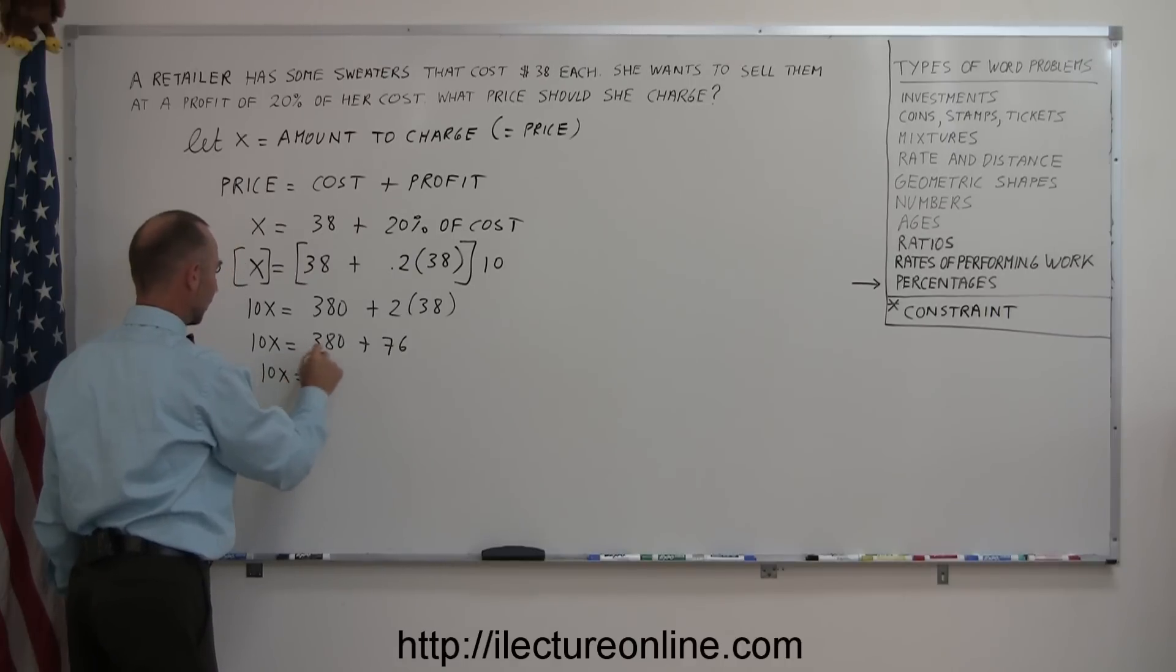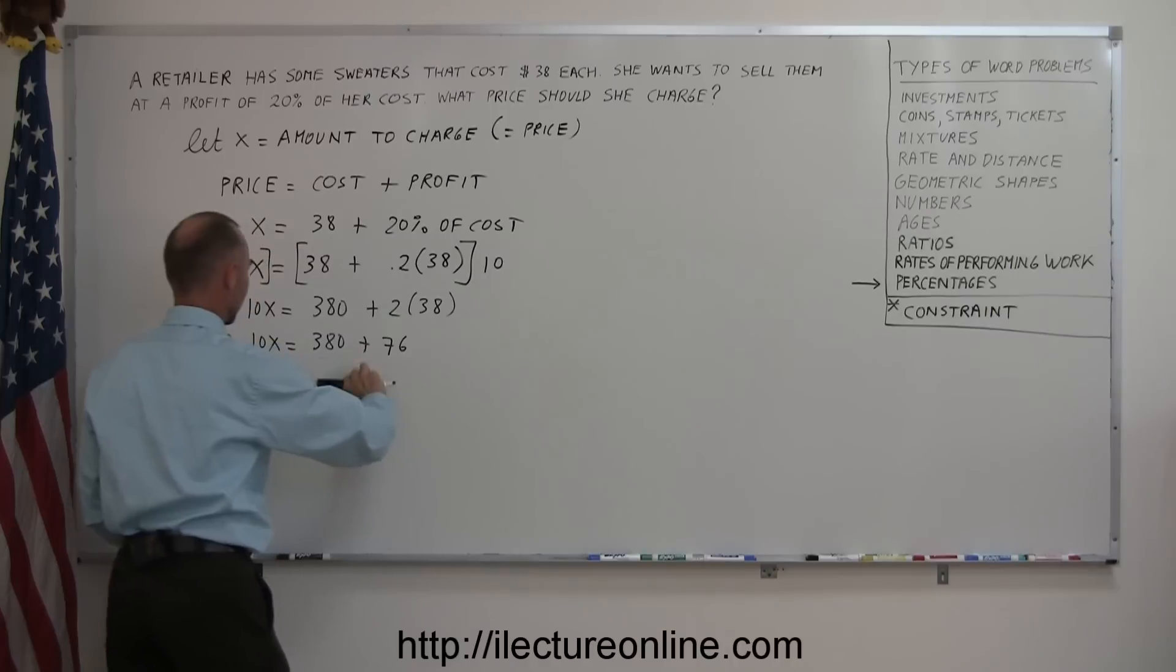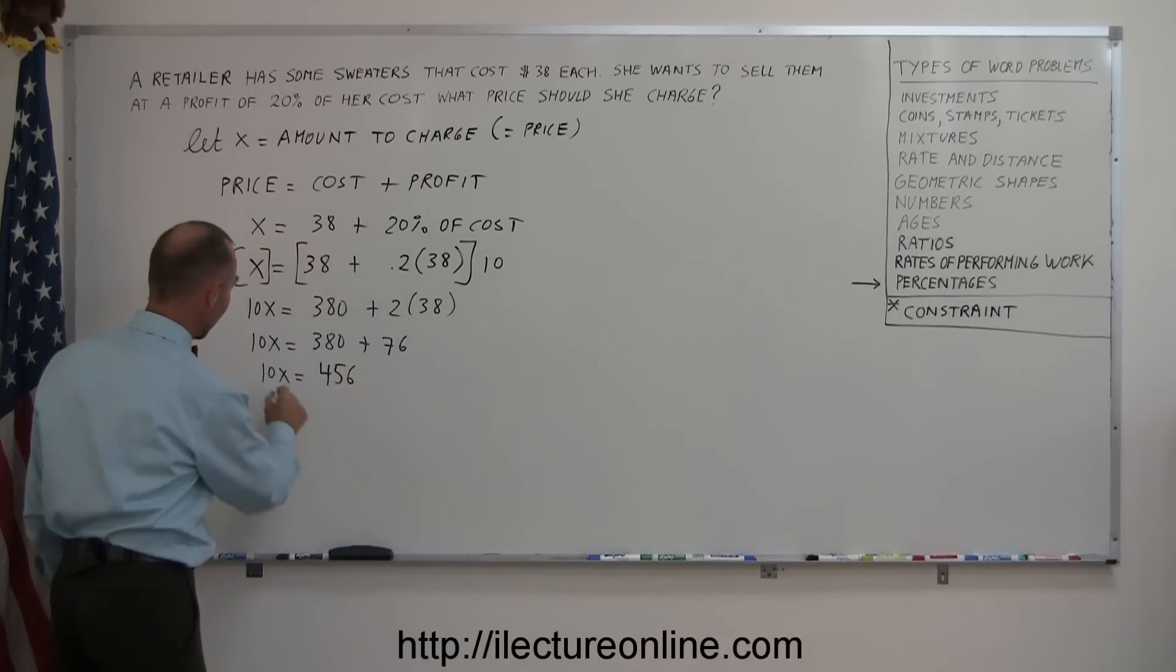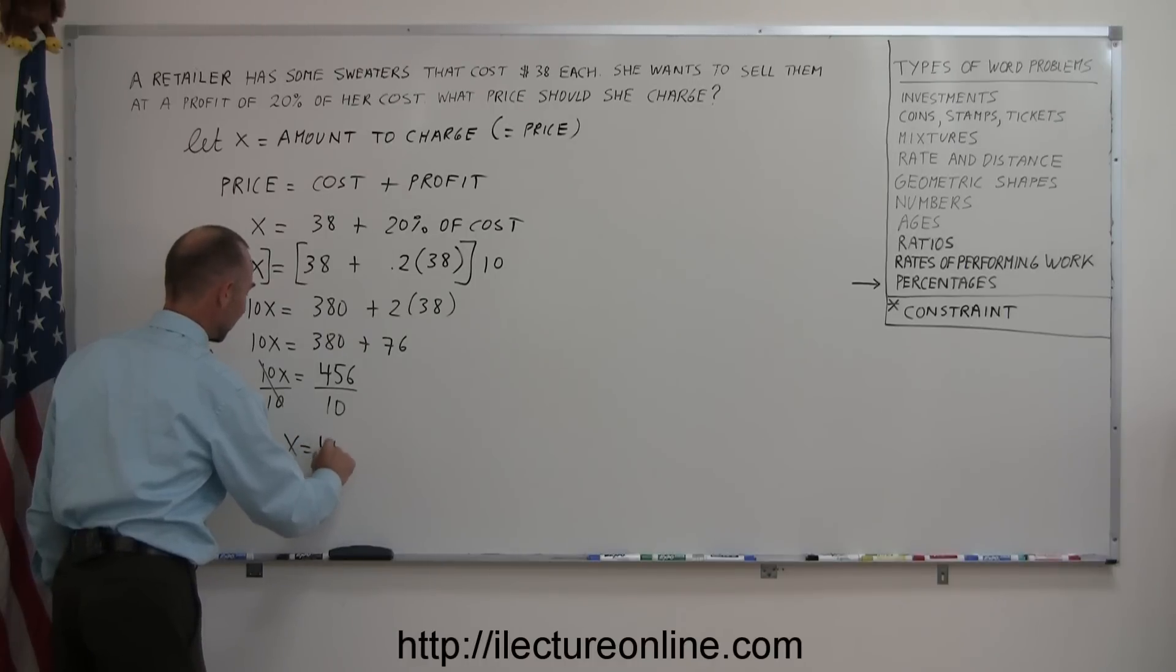So 10X equals, add that together, we get 456. And finally, we divide both sides by the numerical coefficient in front of X. That cancels out. We have X equals 45.6.